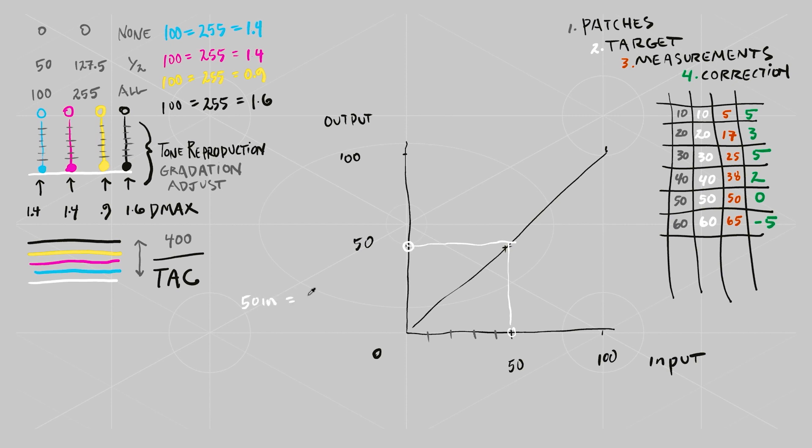When you get a value input that equals the value output, that's called linear response. Input equals output. And when you get that, the curve is actually 45 degrees. Not a curve at all.